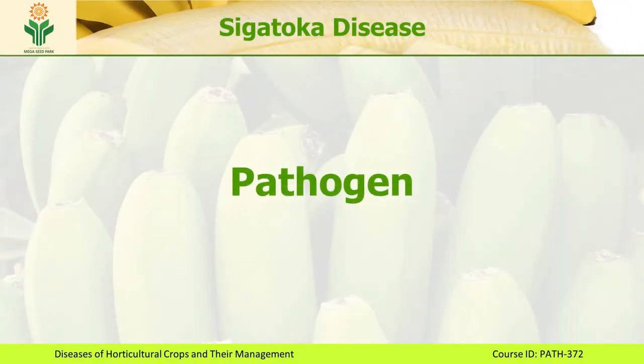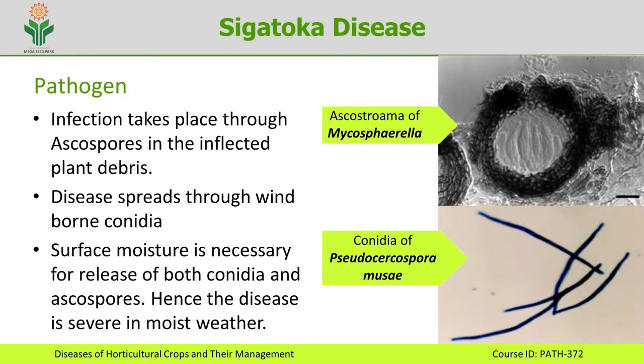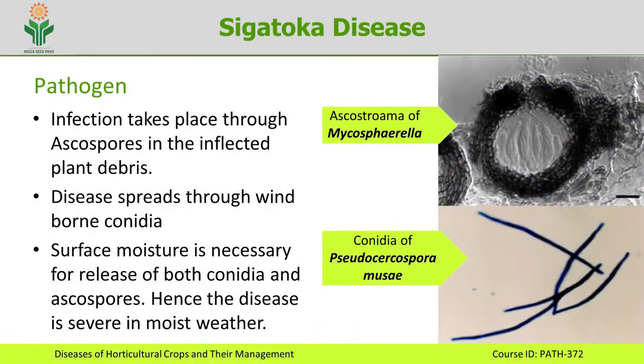The disease is caused by an Ascomycetes fungus. This pathogen is capable of producing ascostromata in which ascospores are produced. During off-season, ascostromata are produced in infected plant debris, which serves as the primary inoculum. Whenever there is moisture, ascospores are liberated from the ascostromata, driven by wind, and land on the host surface.